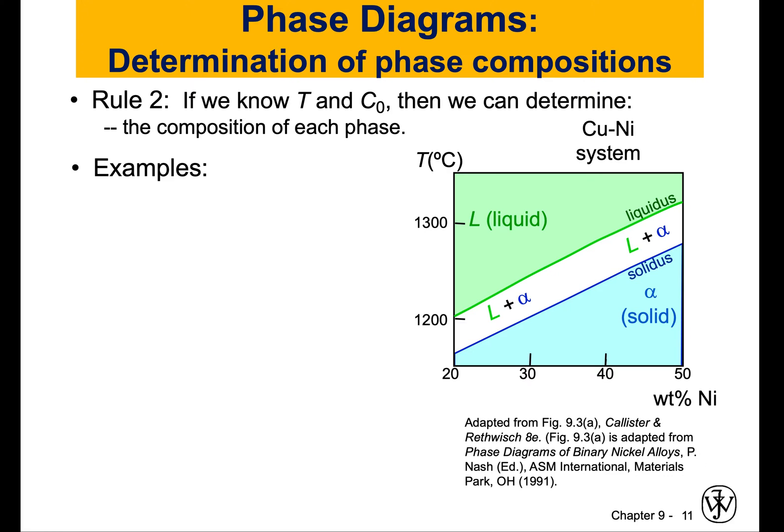In this video, we are going to determine the composition of each phase depending on the conditions that we are identifying. If you remember from the previous video, we said there is rule number one in using the phase diagram: if you know the temperature and the concentration, you can know what kind of phases you have in your material. In this video, we're going to look into rule number two, which is if you know the temperature and concentration, then we can find the composition of each phase if we have multiple phases of our material.